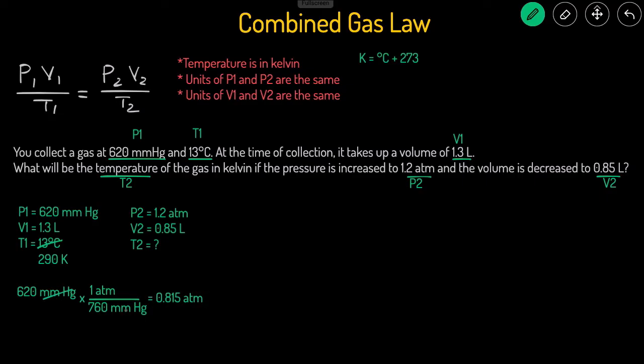This works because the millimeters of mercury will cancel out. In every 1 atm, there's 760 millimeters of mercury. If you're having trouble with that, just check out my pressure conversion video. So now the pressures are both the same. How about the units of volume? Are they the same? And yes, they are 1.3 liters and 0.85 liters. Now that all the requirements are met, let's set it up.